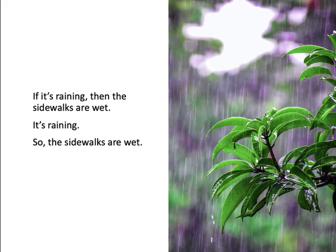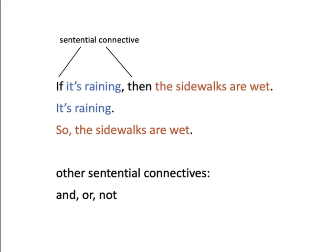To begin, I want you to consider this argument. The first premise is that if it's raining, then the sidewalks are wet. The second premise is that it is raining. Therefore, conclusion: the sidewalks are wet. Now, first ask yourself: is this a valid argument? In order to determine whether it is or not, what we want to do is figure out what the logical form is of the sentences in the argument — what's the logical form of the premises and the conclusion.